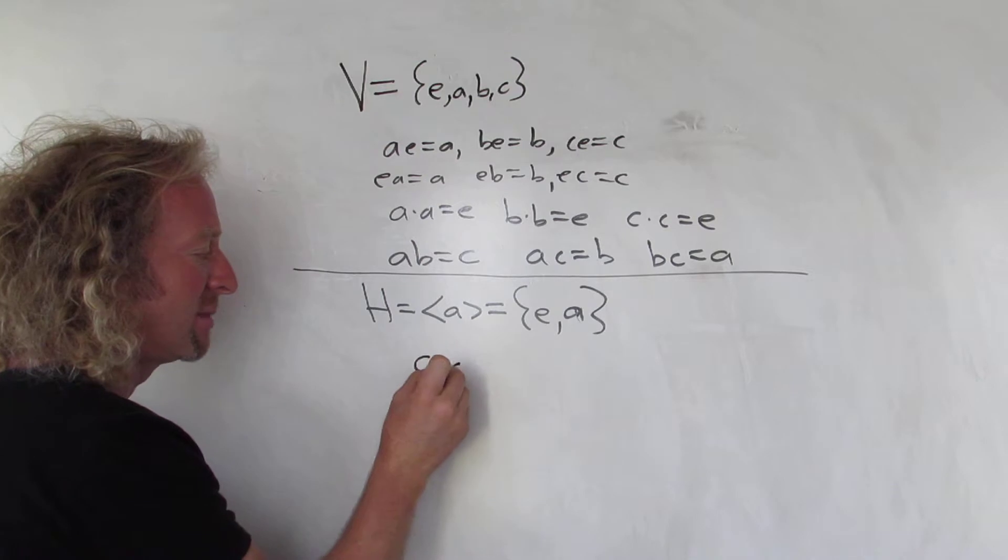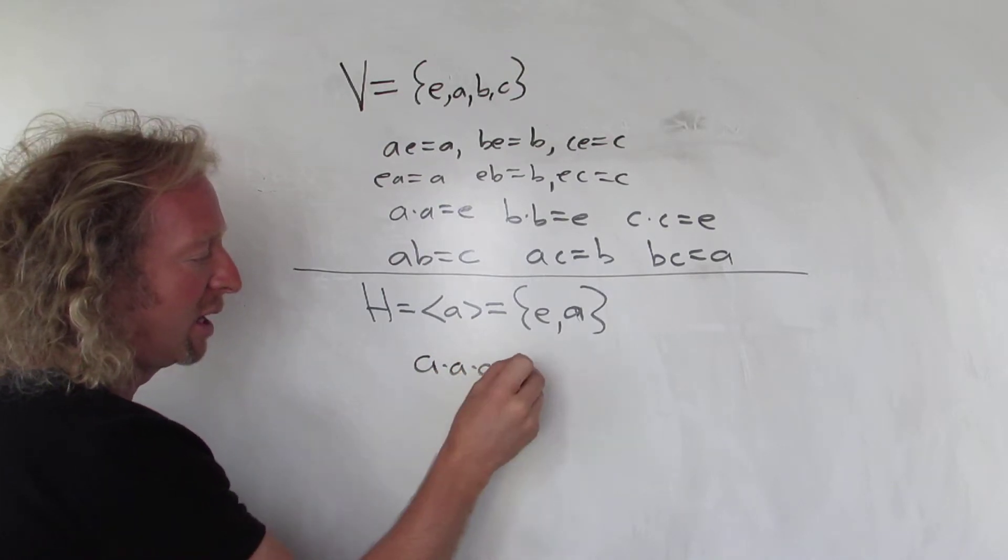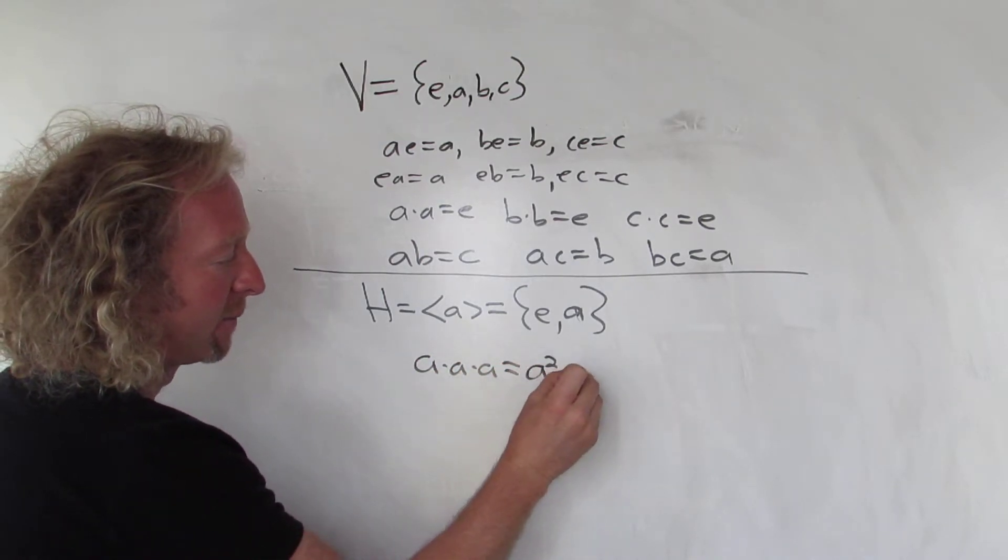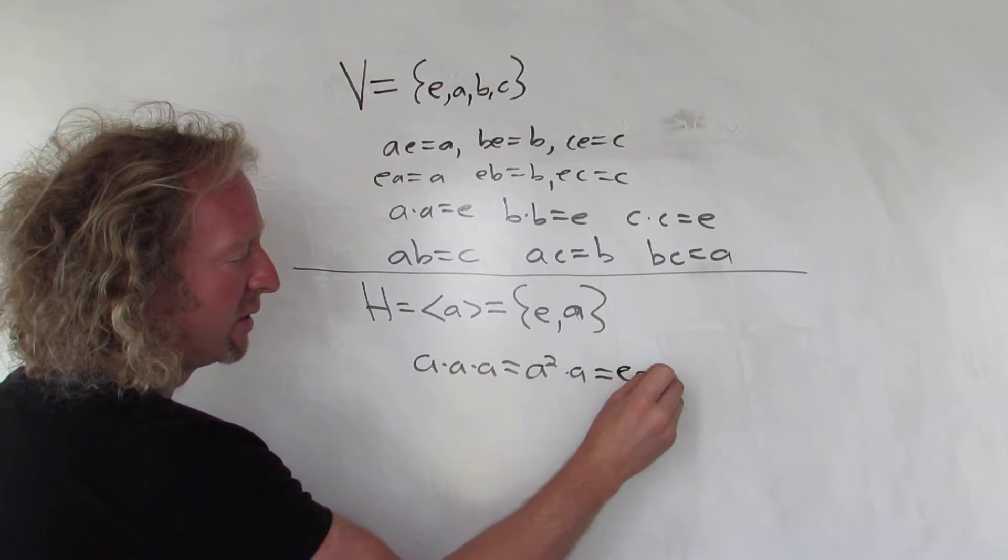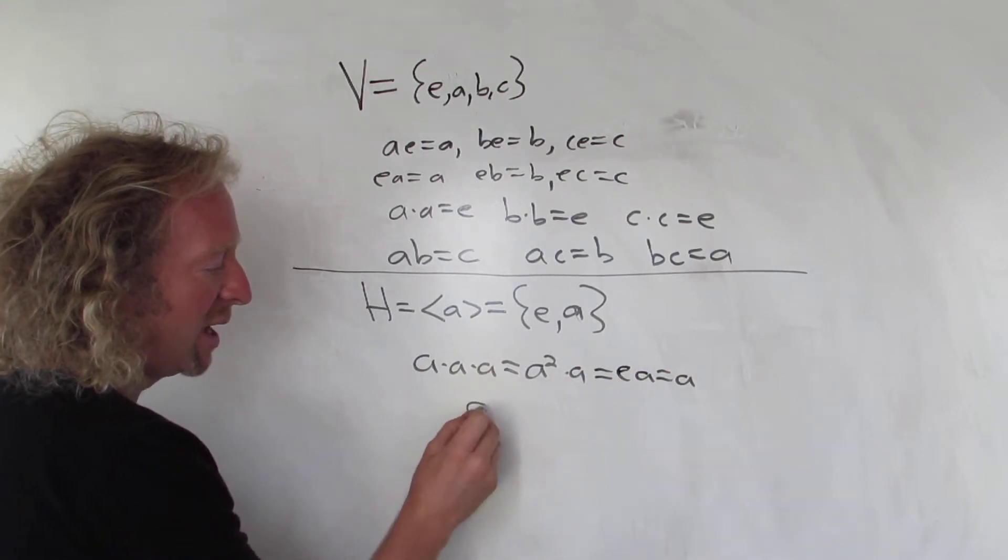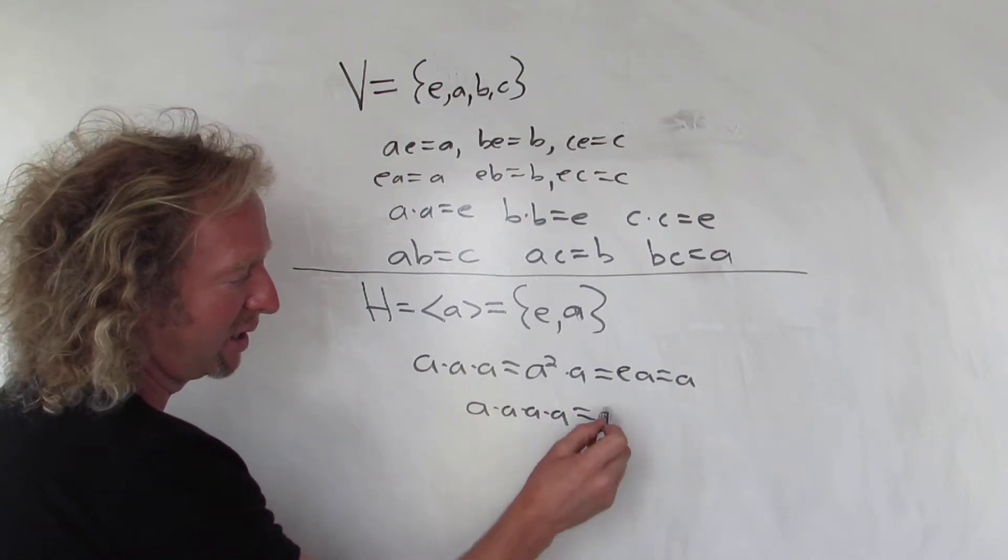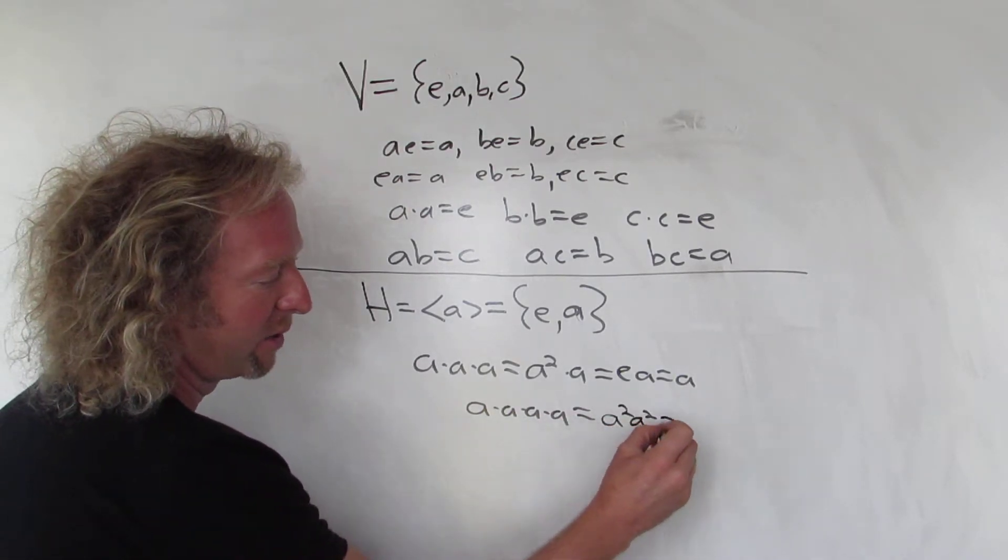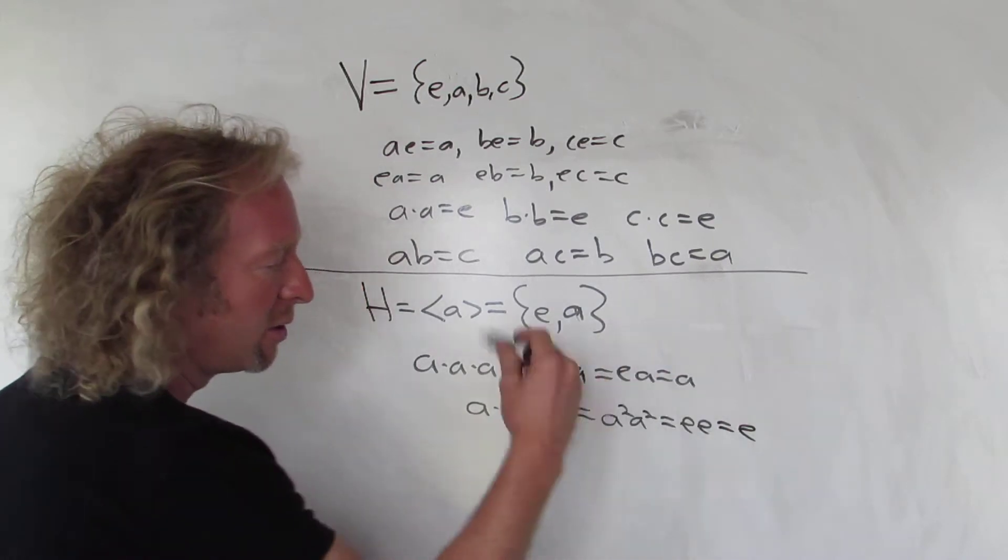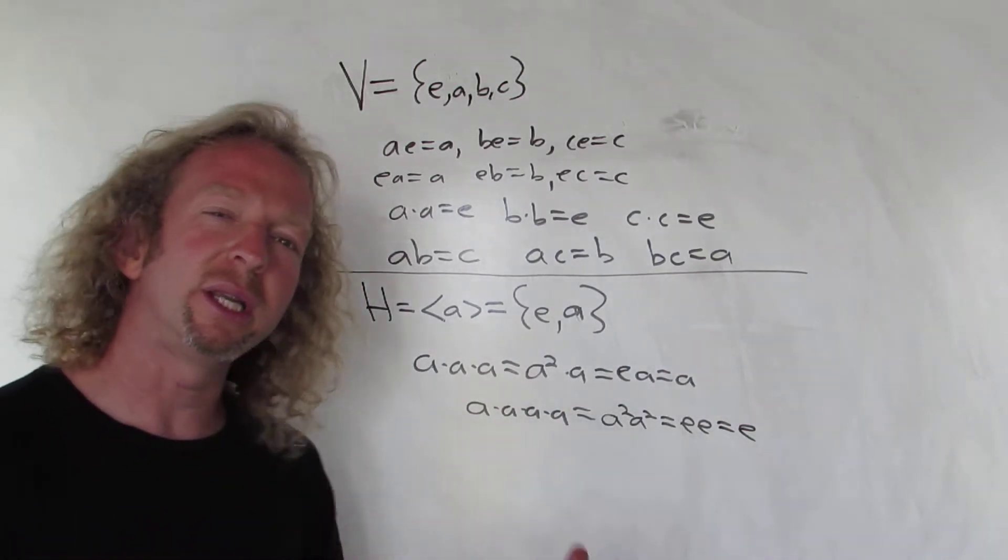Because if you do A times A times A, you're going to get A squared A, but A squared is E. So you get EA, so you just get A. And if you do A times A times A times A, that's A to the fourth. You're just going to get A squared A squared, so E times E. So no matter what power of A you use, you're only going to get E and A.